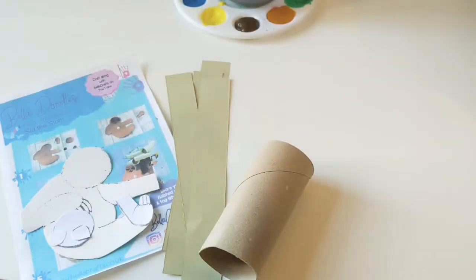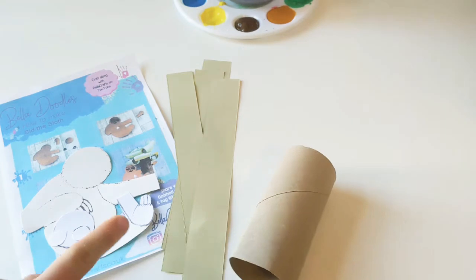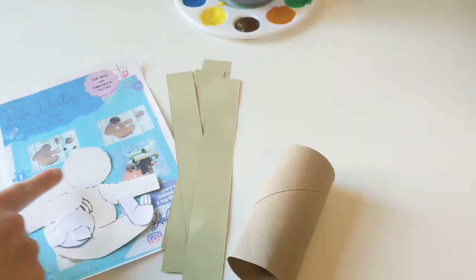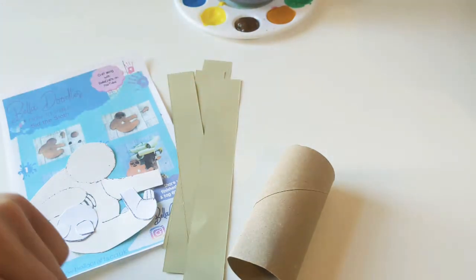So we've got everything that we need here to make Sid the Sloth. We've got our tree trunk, this bit here is going to make the leaves on the top of our tree and then we've got all of our sloth pieces just here as well. I've got some gold, some brown and some yellow paint that I'm going to be using.